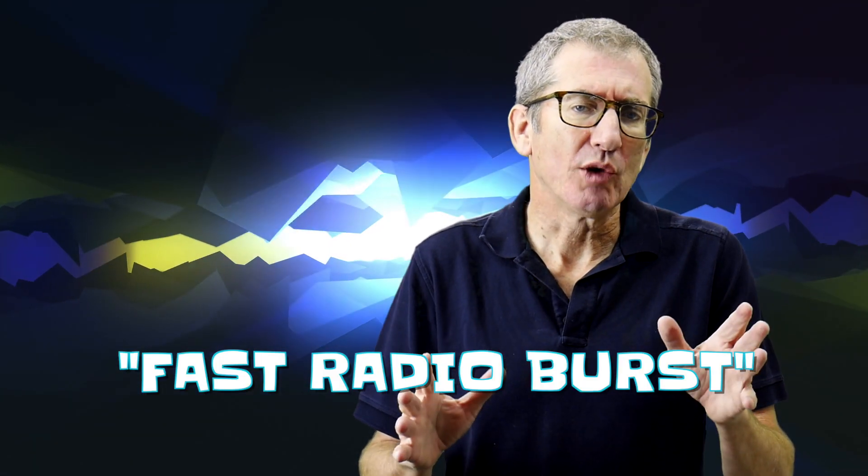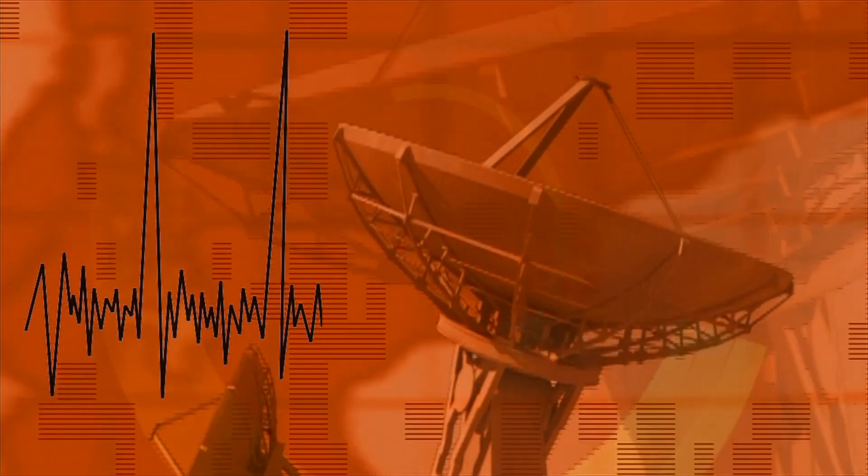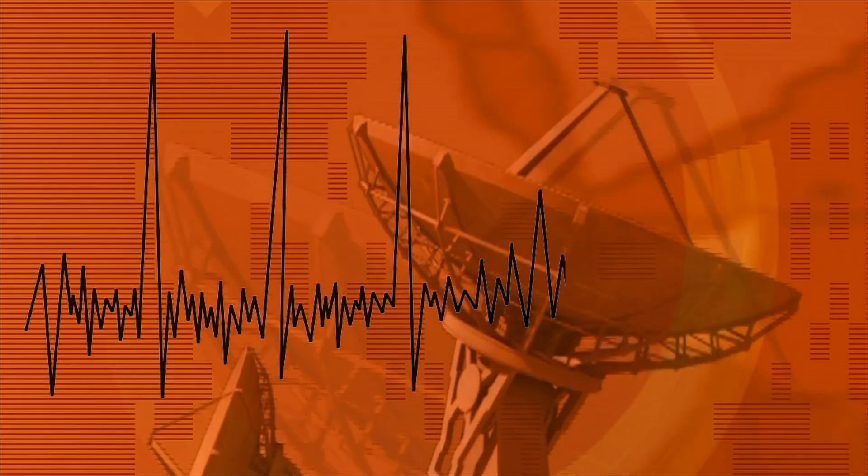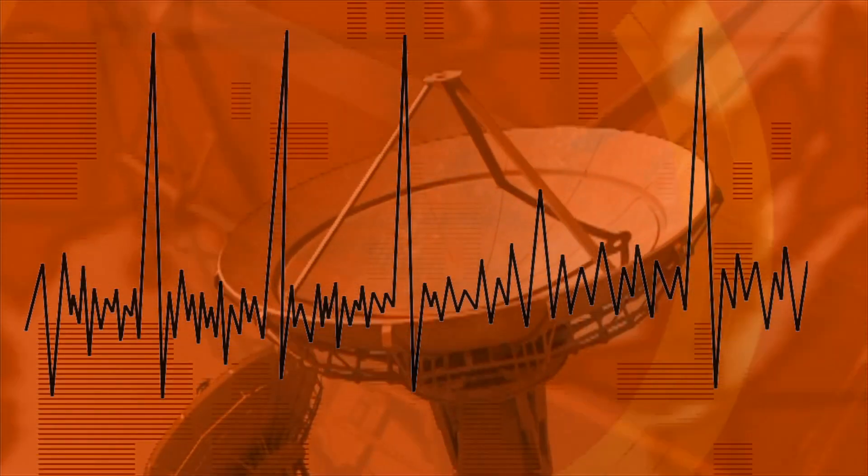They called it a fast radio burst or an FRB for short. They named this one the Lorimar burst after the astronomer who discovered it. Over the next 10 years, astronomers uncovered evidence of more of these fast radio bursts and finally observed one of them live. But still, they had no natural explanation for the source of these bizarre signals.